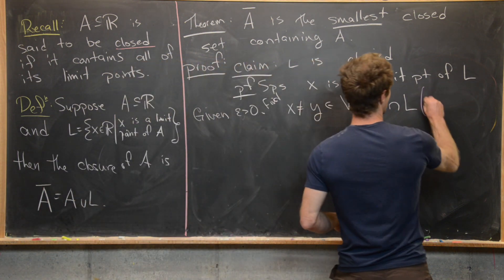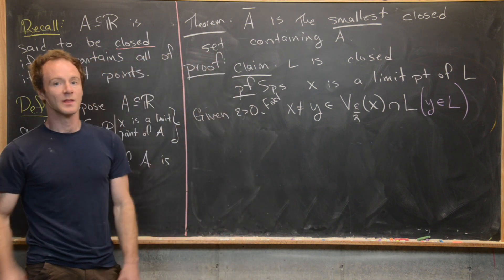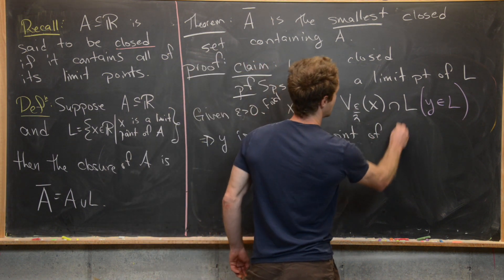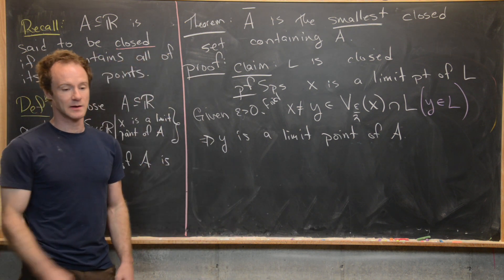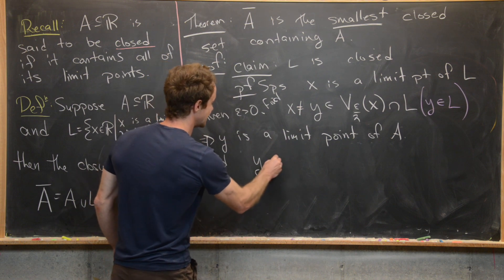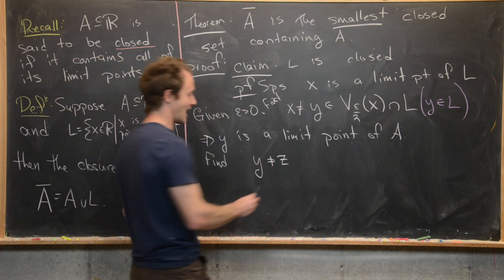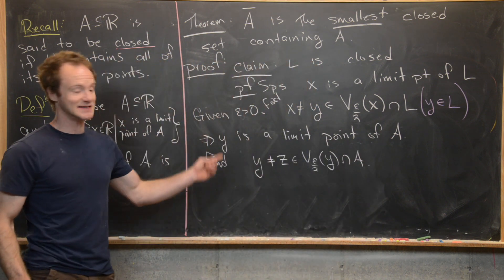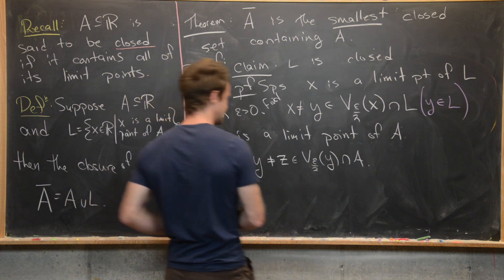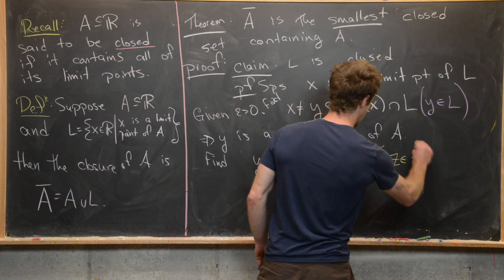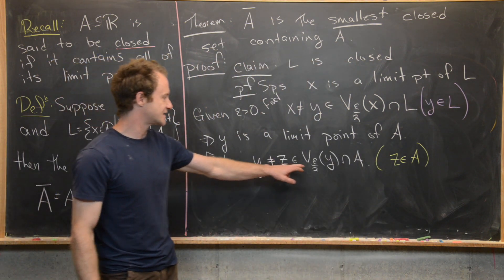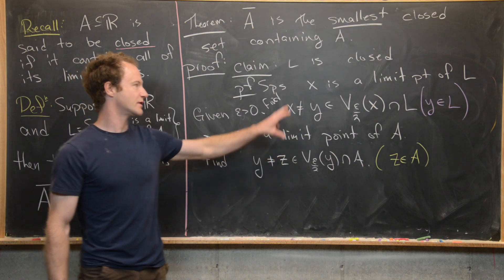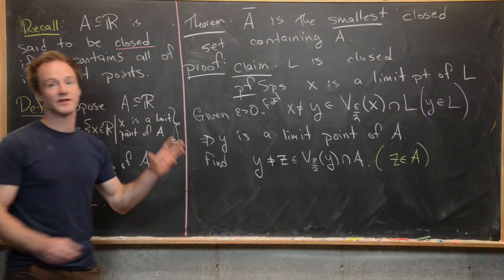From this it follows that Y itself is in L, which means Y is a limit point of the set A. Now we play this game again: we find a Z which is not equal to Y, and Z is within the epsilon-over-two neighborhood of Y intersected with A. So Z is an element from A. Now Z is within epsilon-over-two of Y, and Y is within epsilon-over-two of X, so Z is within epsilon of X.